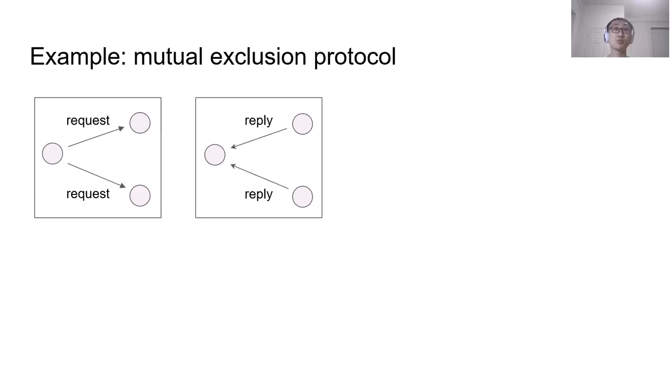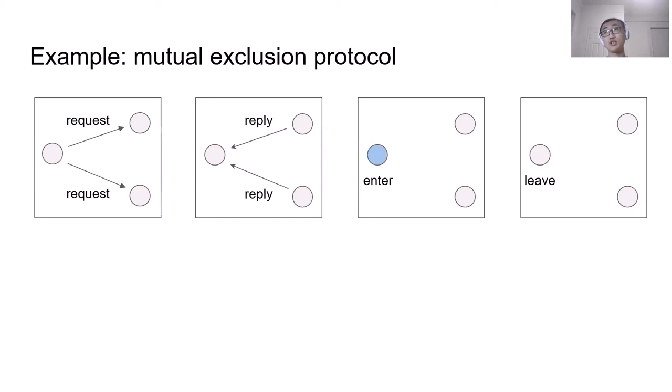Here we use a mutual exclusion protocol to show what an inductive invariant is. If one node wants to enter the critical section, it needs to send requests to every other node, and upon receiving a request, a node can choose to send a reply under some conditions. Once a node receives reply from every other node, it can enter the critical section, and after finishing the code, it can leave the critical section.